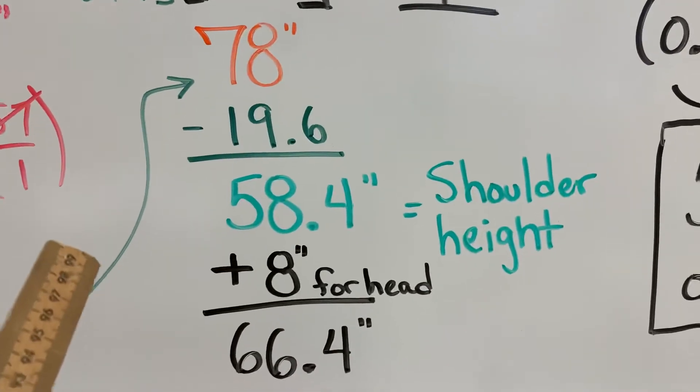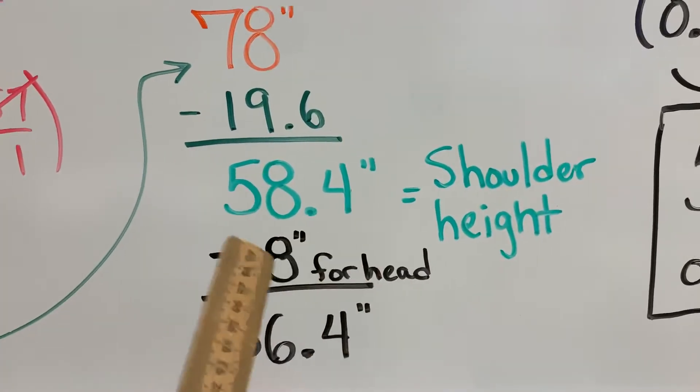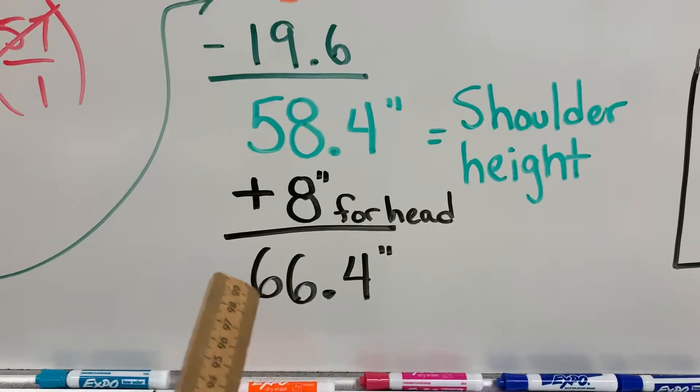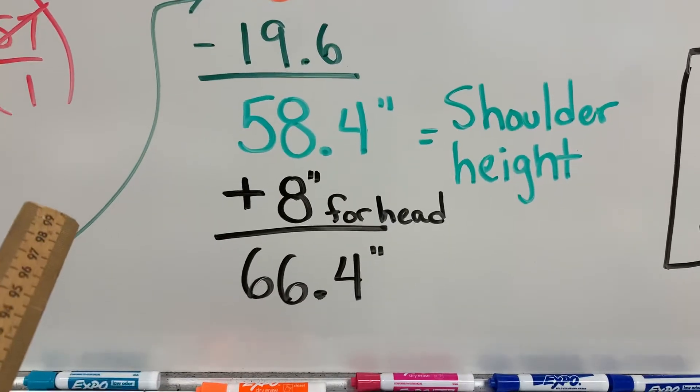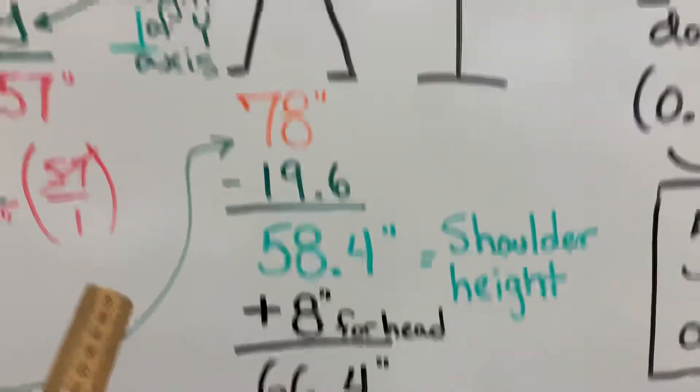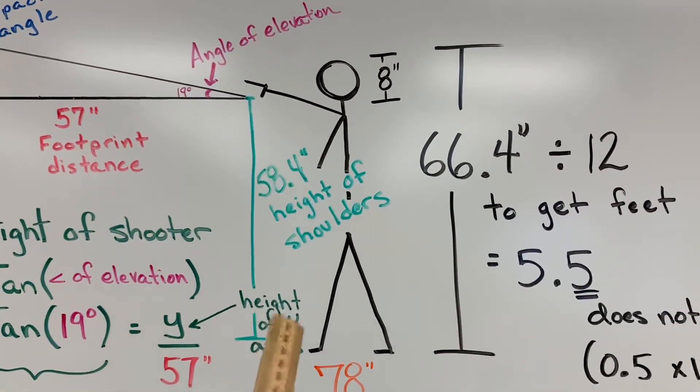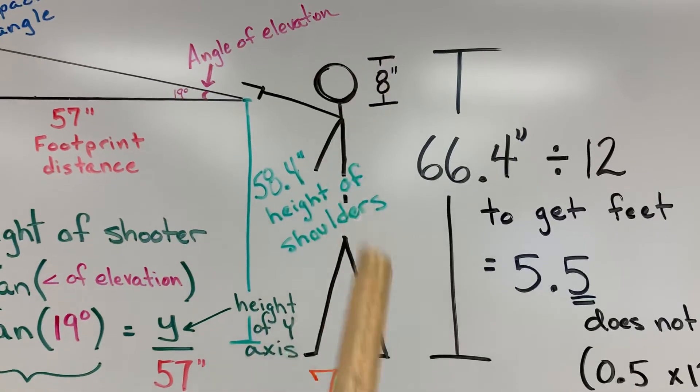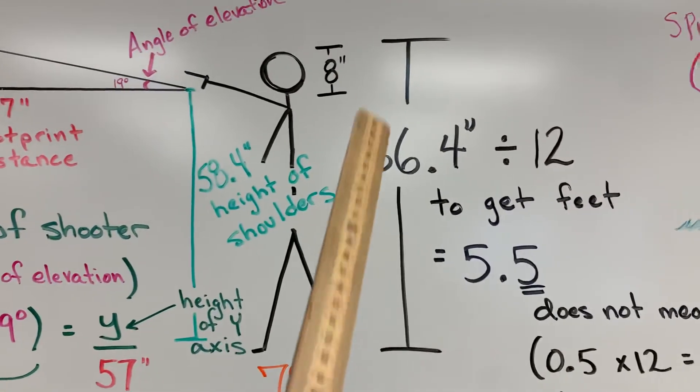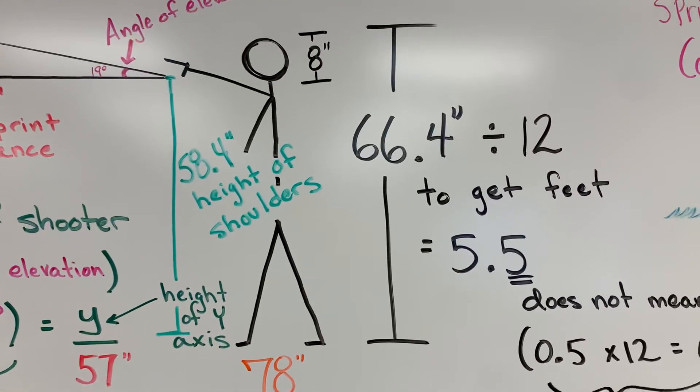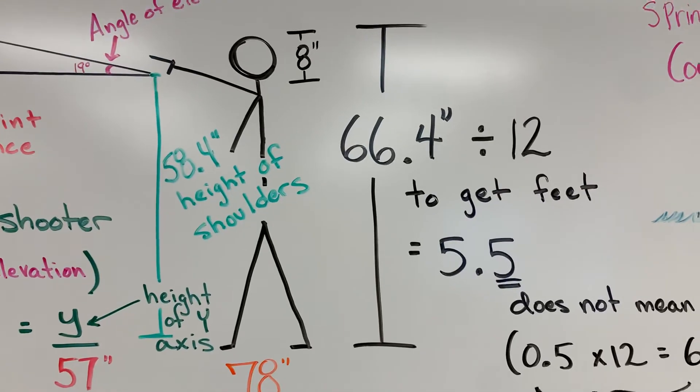And of course we add eight inches for the head, which gives us a total height in inches for the shooter. So you'll see we've done that here. There's the height of the shoulders, there's the height of the head, gives us a total height of 66.4 inches for the shooter.